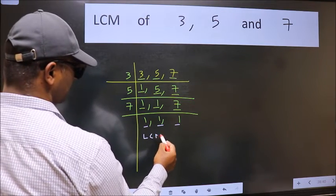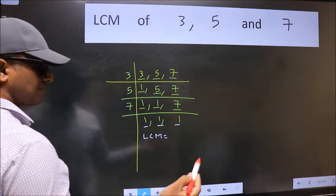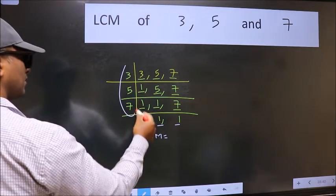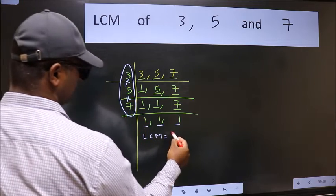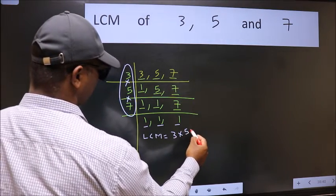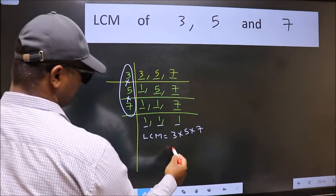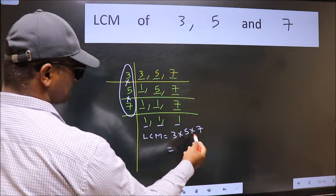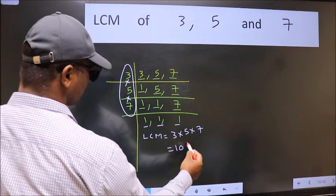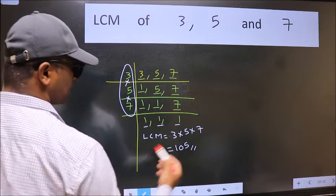So our LCM is the product of these numbers that is 3 into 5 into 7. When we multiply these numbers we get 105 as our LCM.